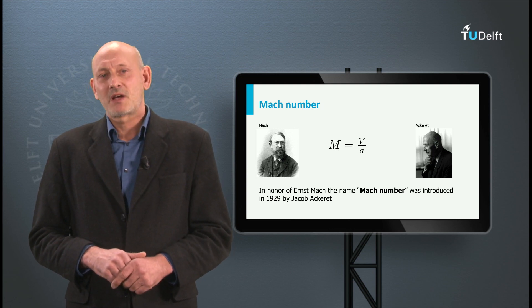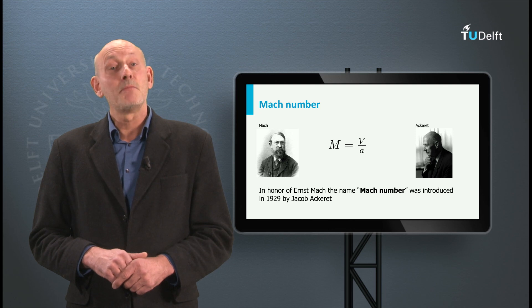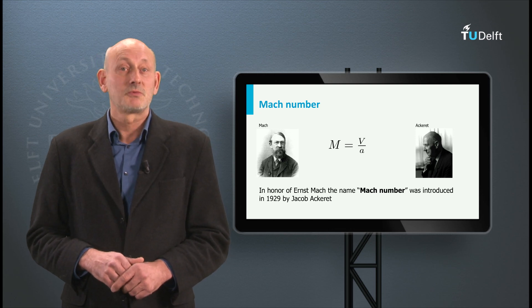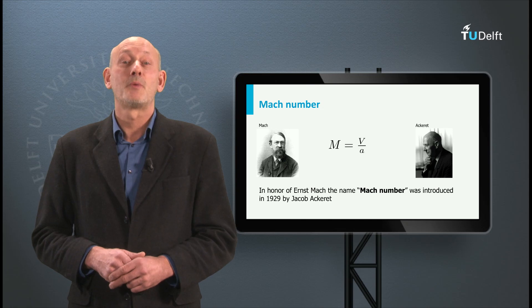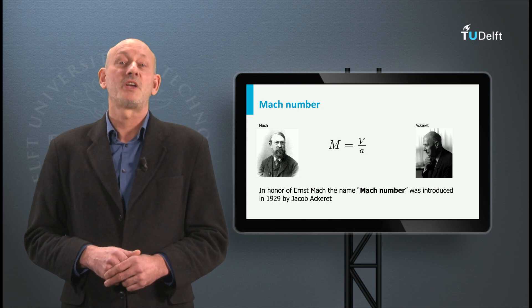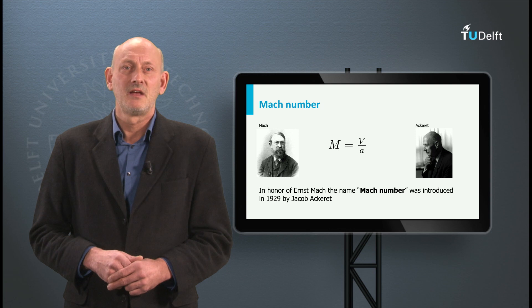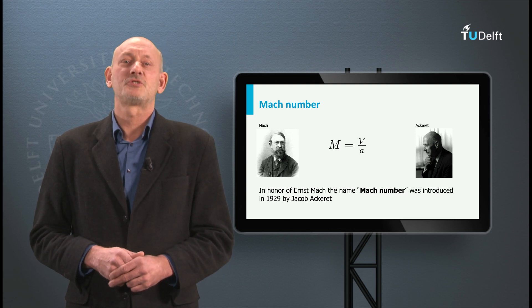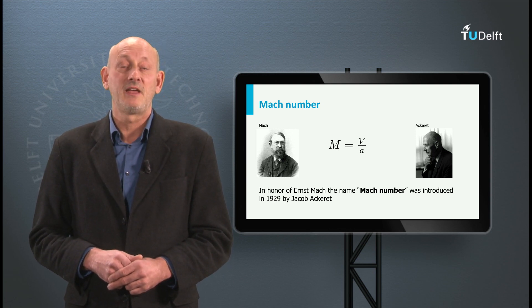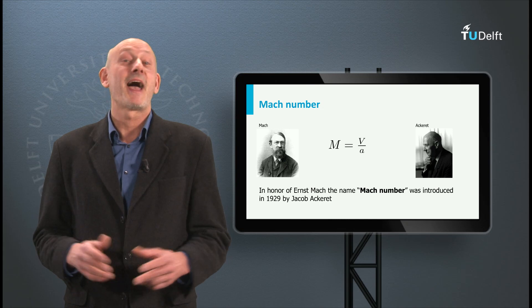However, during Mach's lifetime the name Mach number was unknown. It was only after his death in 1916 that an influential aeronautical engineer called Jacob Ackeret during a conference in 1929 proposed to give the ratio V over A the present name. And so it happened.